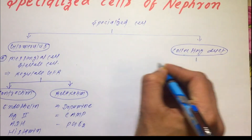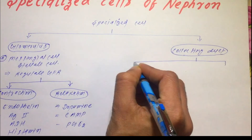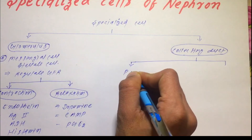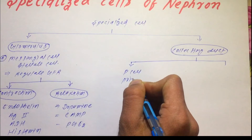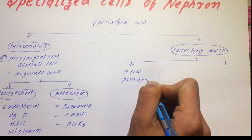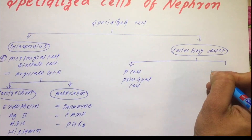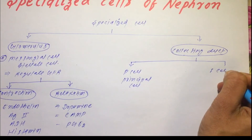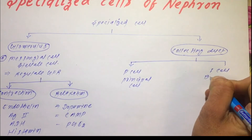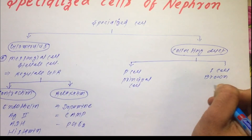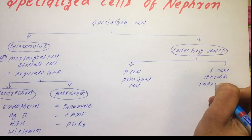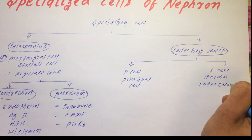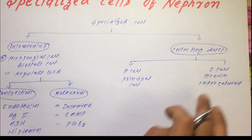Now we will talk about the specialized cells present inside the collecting duct. In the collecting duct, there are two types of cells: the first is the P cell, also called the principal cell, and the second is the I cell, also known as the brown cell or intercalated cell.